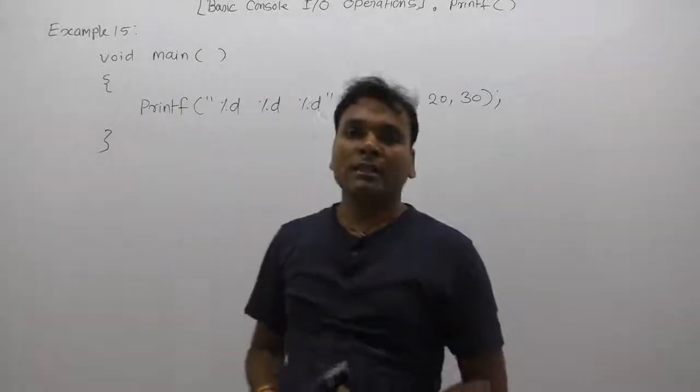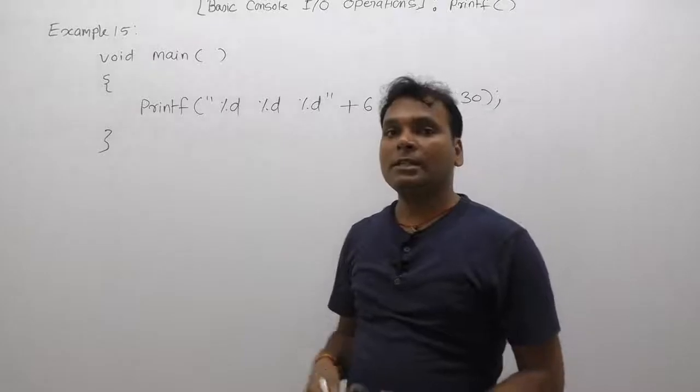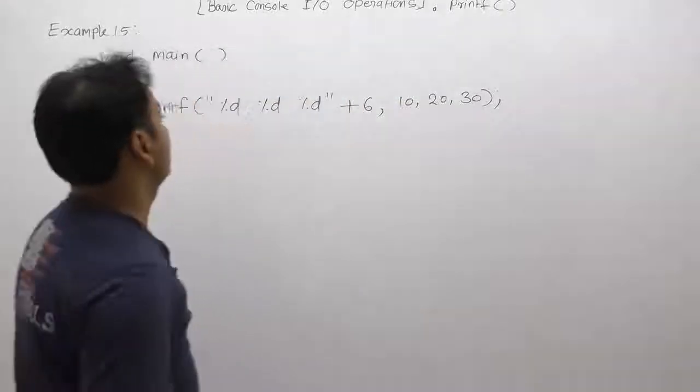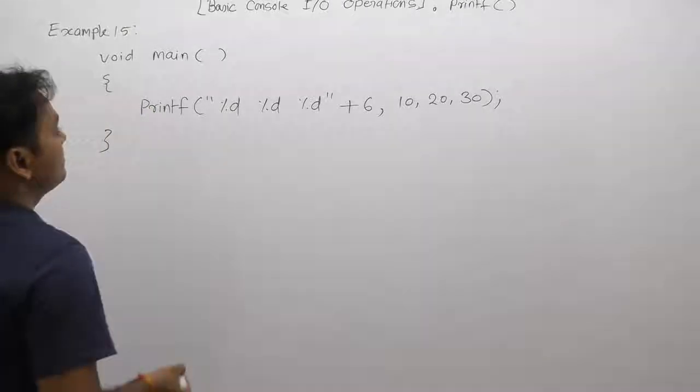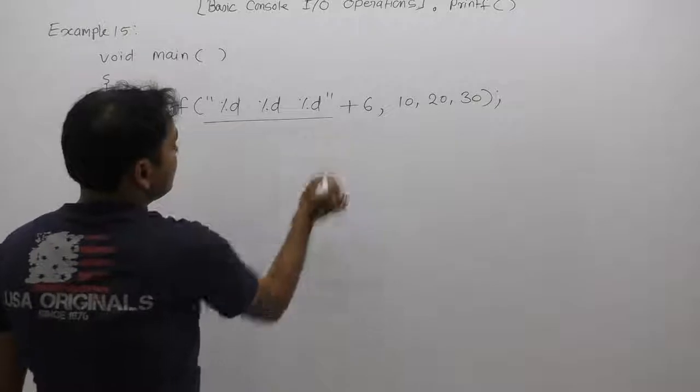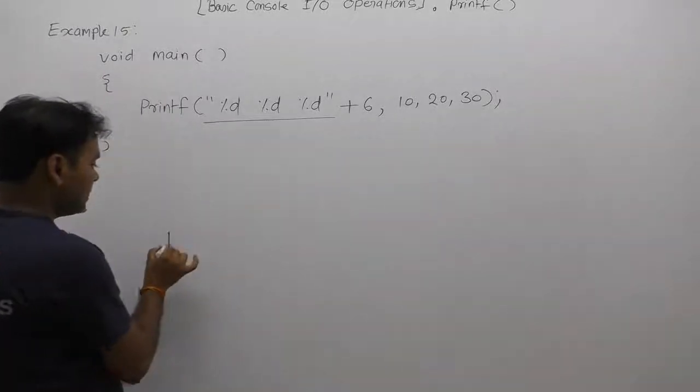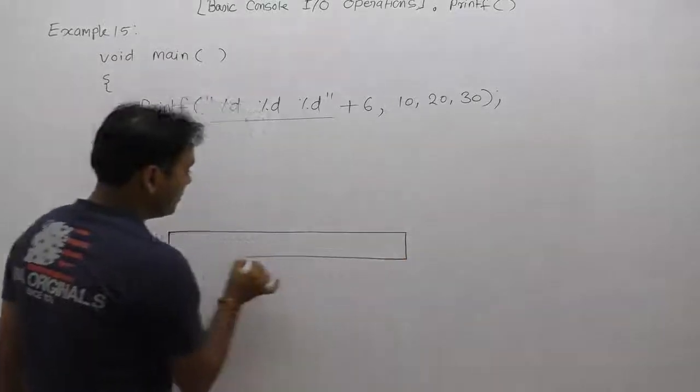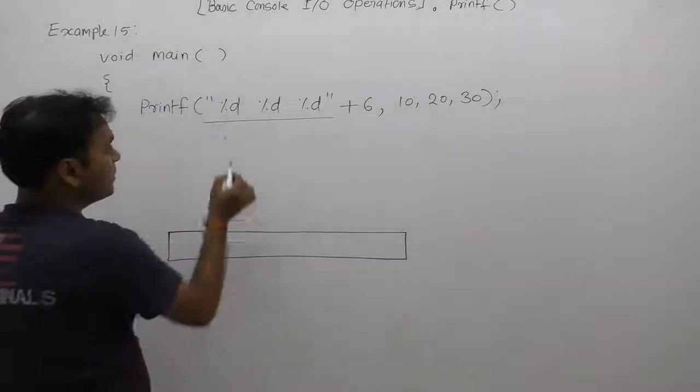Now let's see another example using the same concepts as previous. First, before processing this printf, we are converting the system into the form of memory representation as an array of characters. How many characters are supplied here?